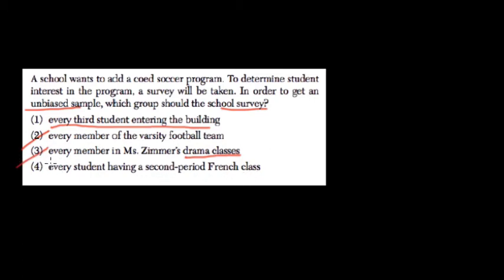Every student having a second period French class — again, those are all students interested in French, so you only get a small sub-population. Every third student entering the building will be the most random, which is what you want, and the most diverse because everybody needs to enter the building to begin with.